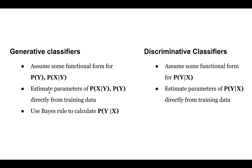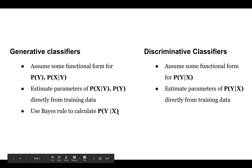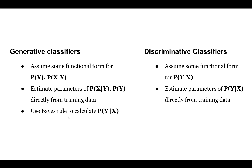For the generative model, we estimate the parameters P(X,Y) and P(Y) directly from the training data. For the discriminative model, we estimate only P(Y|X) from the data. That is the key parameter difference — what parameters each model has to learn for estimating Y given X.